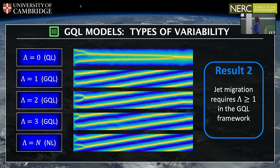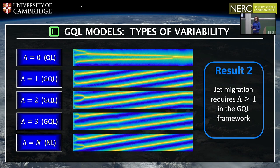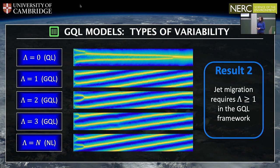In the fully non-linear system, two jets are migrating north. When we go to the quasi-linear model, as expected, the migration behaviour disappears. However, if we systematically increase the value of our separation wavenumber lambda, we immediately see migration behaviour restored — and in fact the properties of the migration, such as the migration speed of the jets, have also been restored. This is the second main result: migration requires lambda to be greater than or equal to one in the generalised quasi-linear framework.